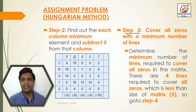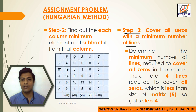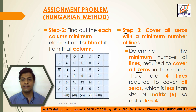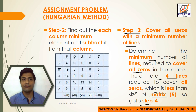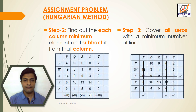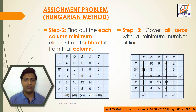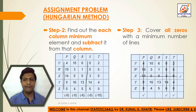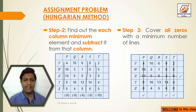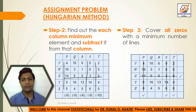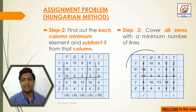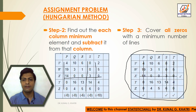Step 3: Cover all zeros with the minimum number of lines, determining the minimum number of lines required to cover all zeros in the matrix. There are 4 lines required to cover all zeros, which is less than the size of the matrix (5). In the first column we cover 2 zeros, second column 1 zero, fourth column 2 zeros, fifth column 2 zeros, and in the third row we cover 2 zeros — giving a total of 4 lines. So we go to Step 4.